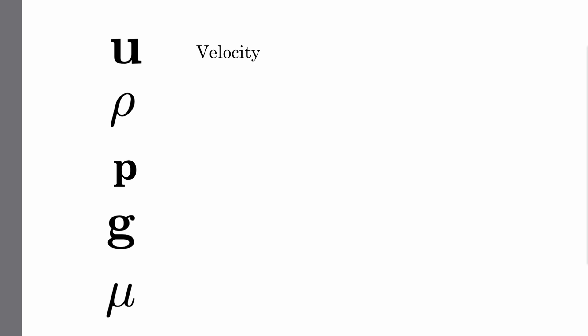The letter u is the symbol for the velocity of the fluid. The Greek letter ρ (rho) is a symbol for the density of the fluid. The letter p is a symbol for the internal pressure of the fluid.